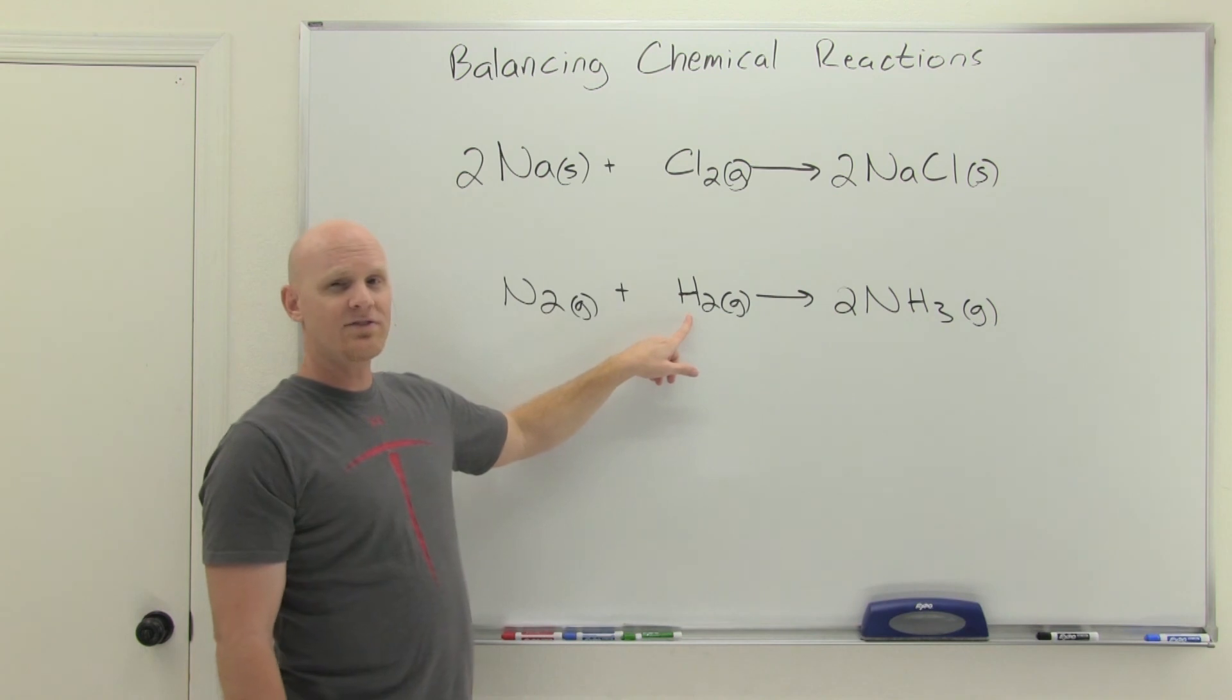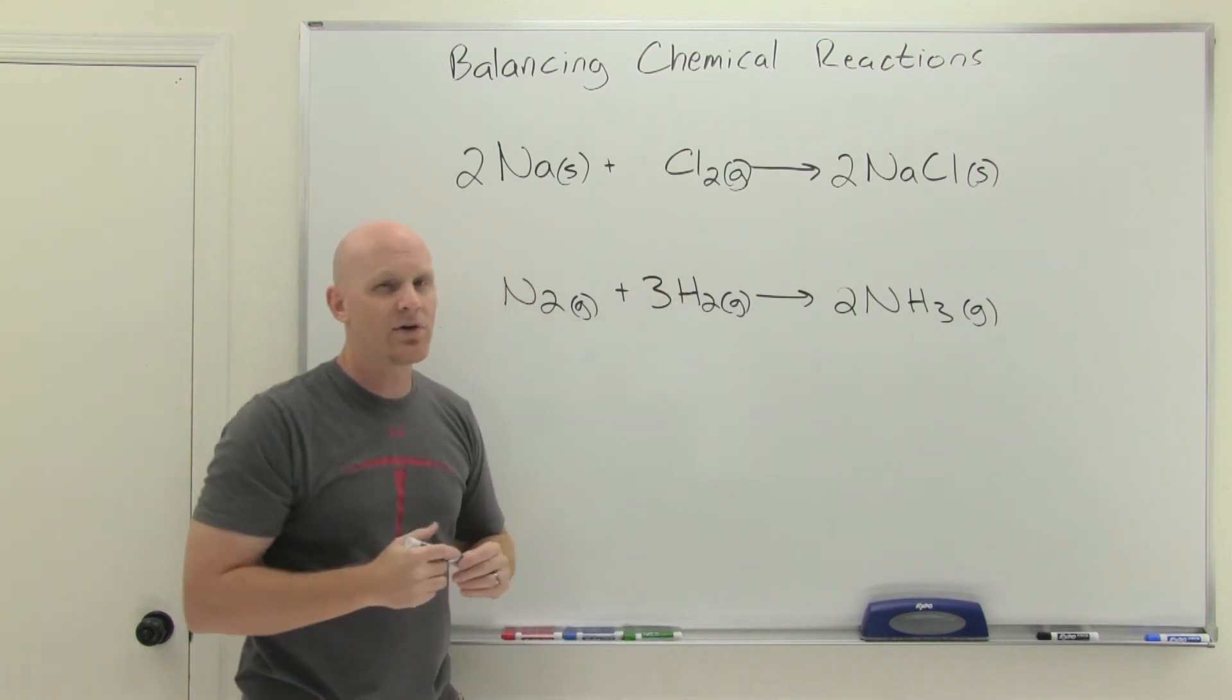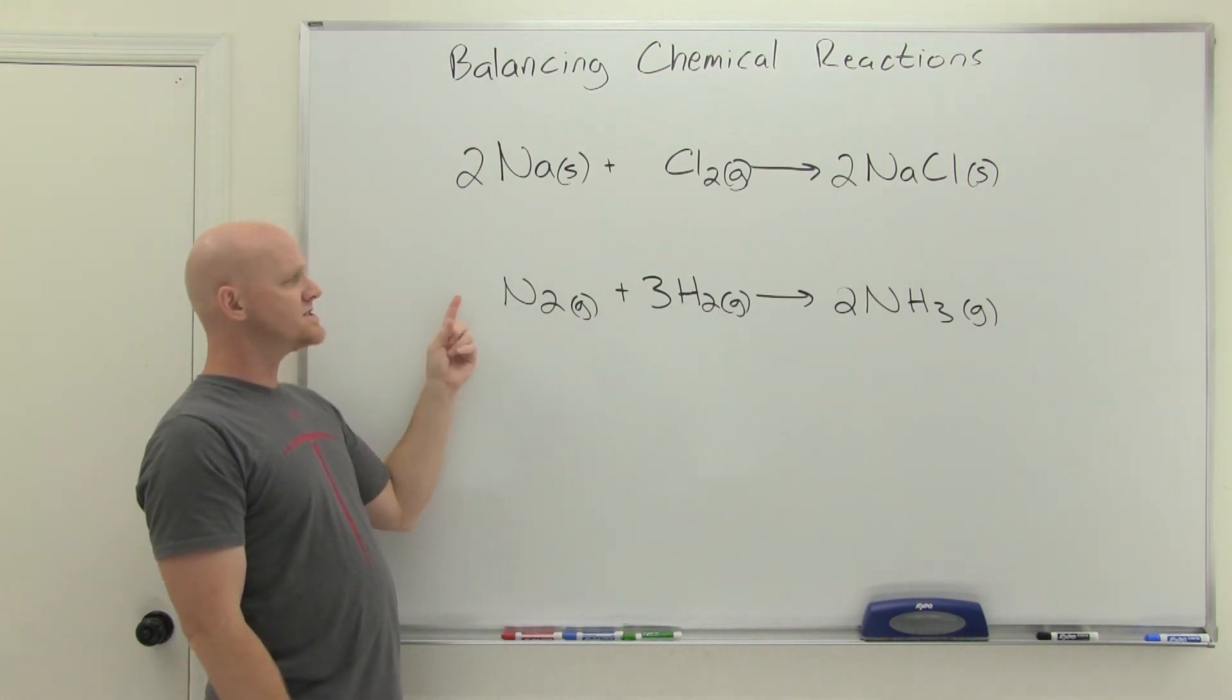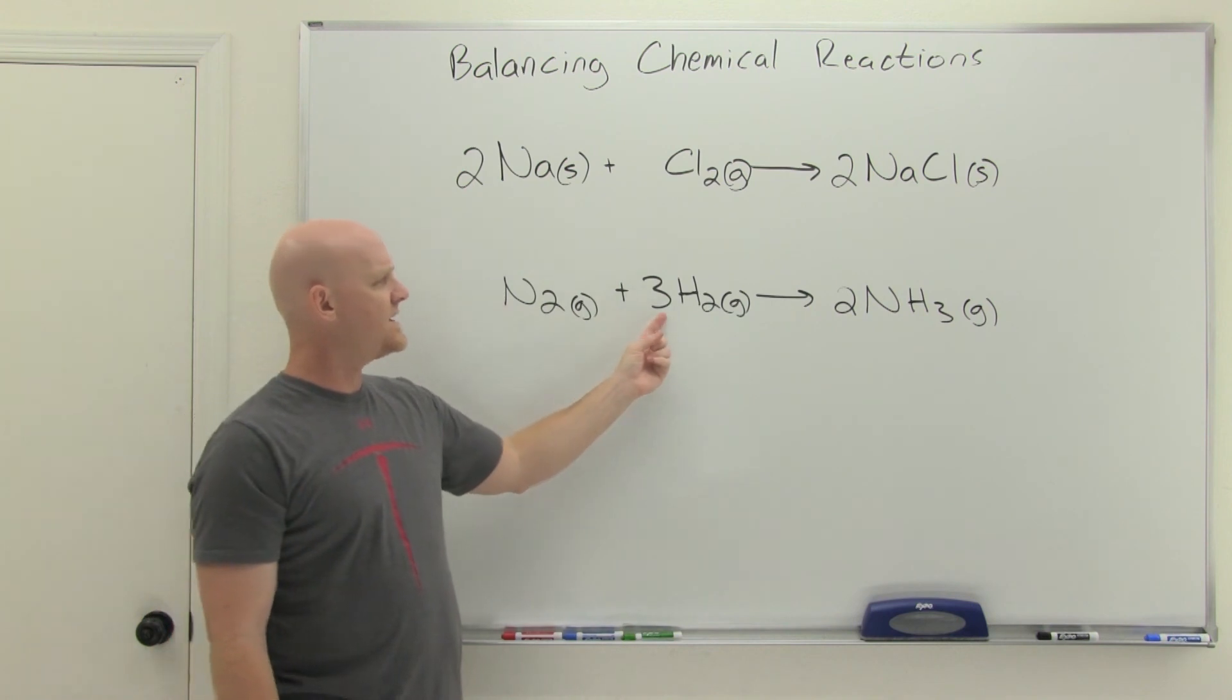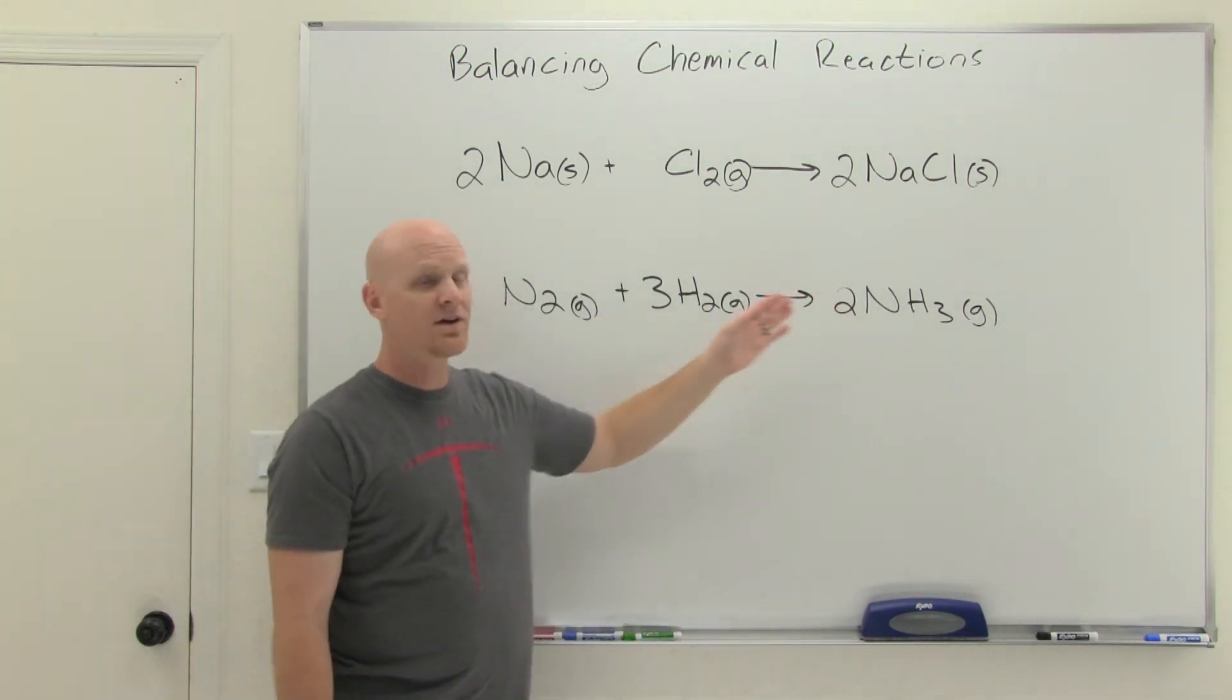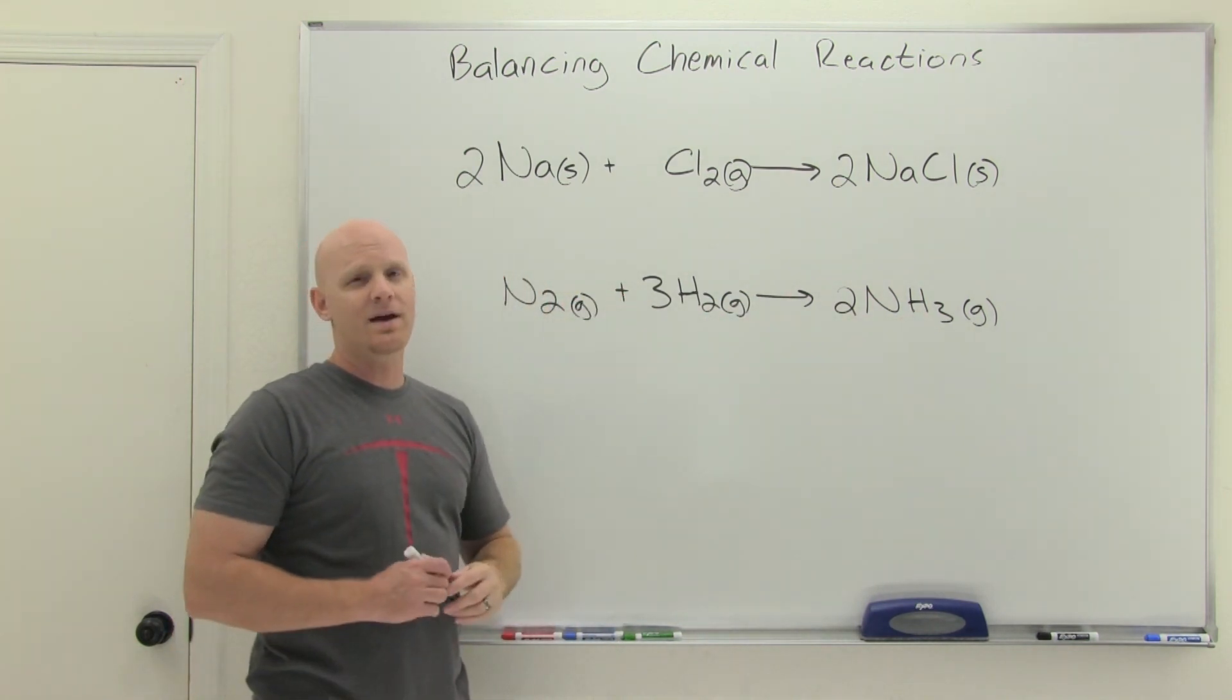And to get six on this side, they come two by two by two, I'm going to need to add three hydrogen molecules on this side. And so we've got one nitrogen again with no coefficients, implied there's one of these, plus three H2s goes to two NH3s. And you'll find that we've got two nitrogens on both sides, six hydrogen atoms on both sides, and we've got another balanced chemical reaction.